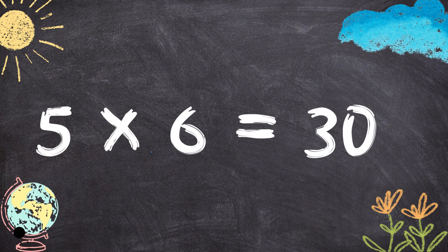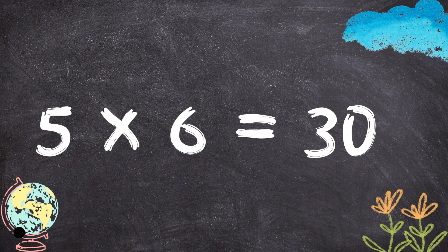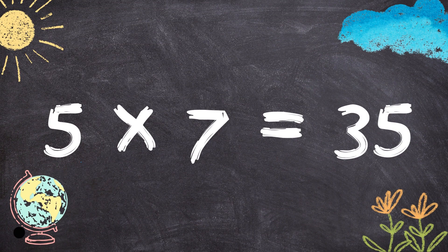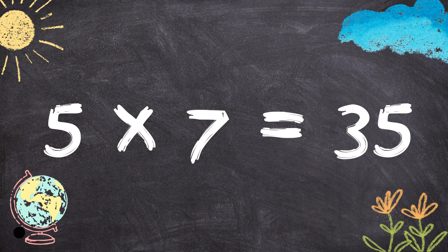5 times 6 equals 30. 5 times 7 equals 35.